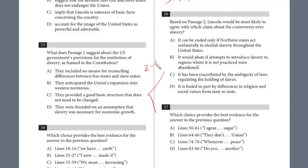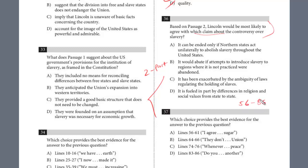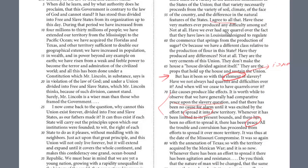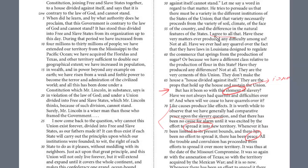Always scan down — this is a two-part question. Based on passage two, Lincoln would most likely agree with his claim about controversy over slavery. Remember, he even conceded 'this much is true,' and you can almost predict that he is really against the expansion. So the claim he would agree with is probably about his current position on slavery. We know it's between lines 56 and 86. At line 56, we see 'I have agreed with that.' Have these matters proved any difficulties? Not at all.